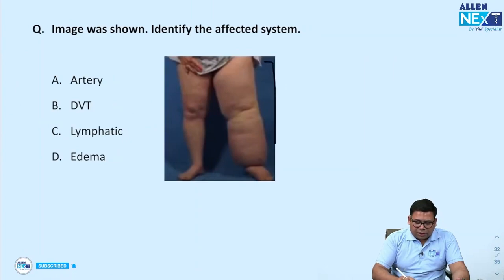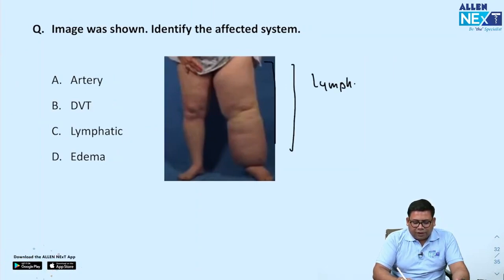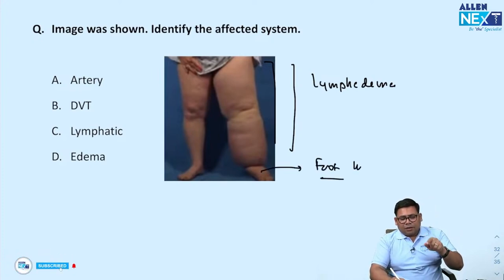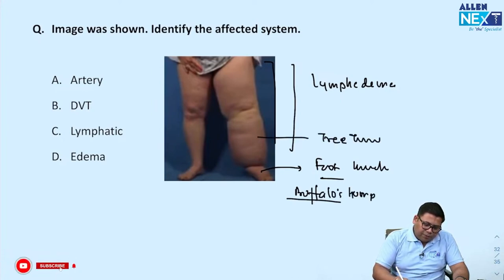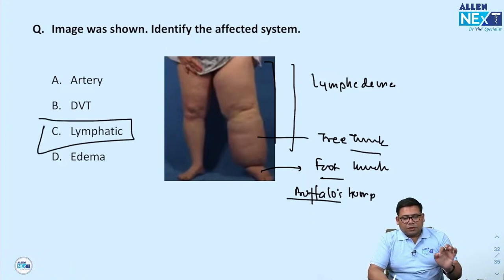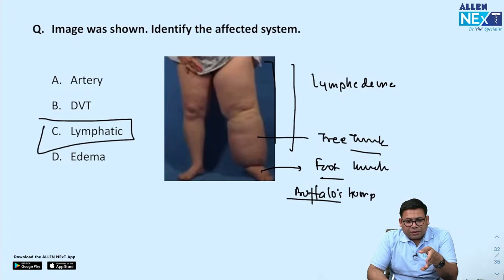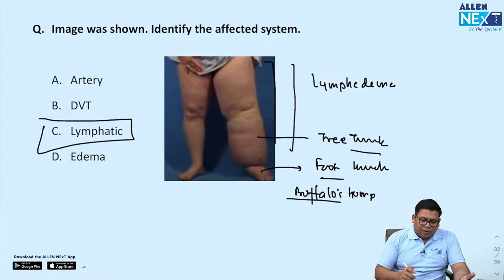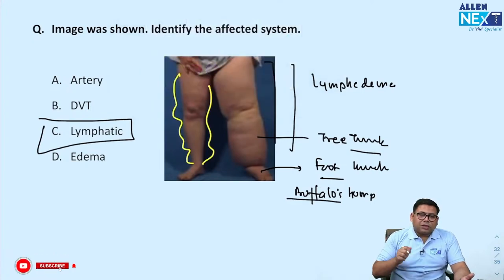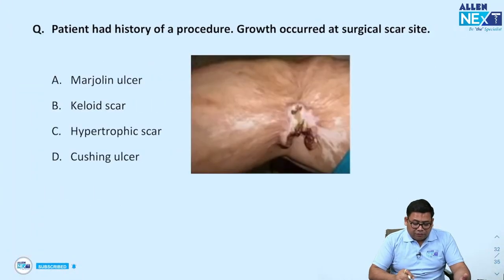Image showing classical lymphoedema. Why lymphoedema? The foot is involved — if it were venous oedema, the foot would not be involved. Classical features include buffalo's hump and tree trunk limb. This is a lymphatic disorder. If it had been venous oedema, the foot would be spared. The pancreatitis signs answer: if haemorrhagic pancreatitis was the option, that is the same as severe acute pancreatitis or haemorrhagic pancreatitis.